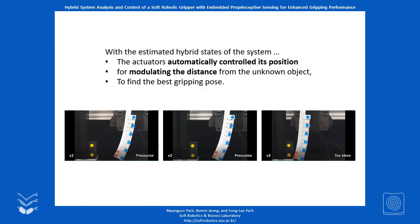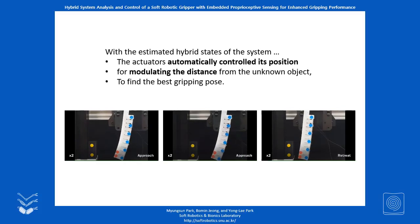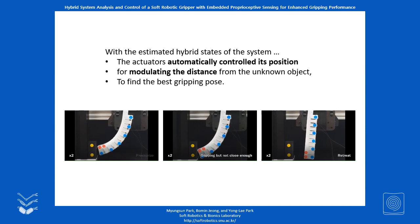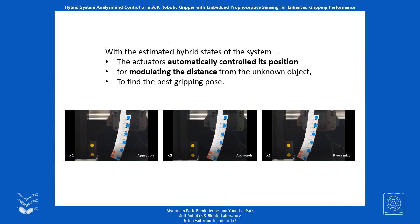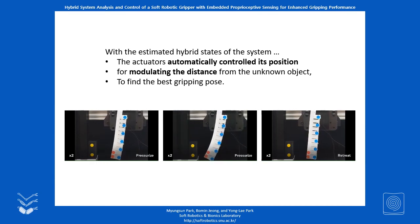By estimating the state, the system was able to modulate the distance between the actuator and the object so that the actuator's end effector could generate enough gripping force to the object. The video showed that the automated system worked well for various initial conditions.